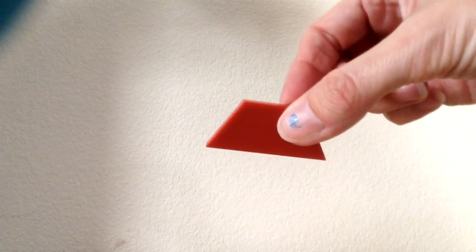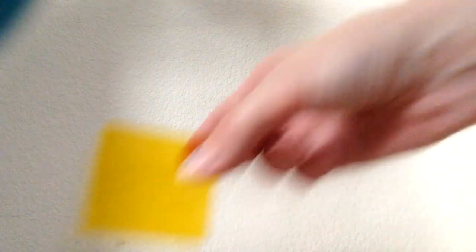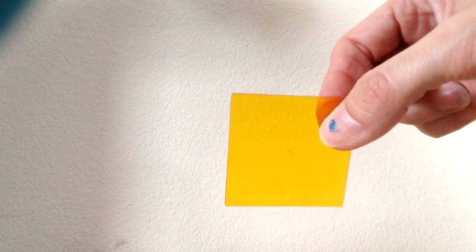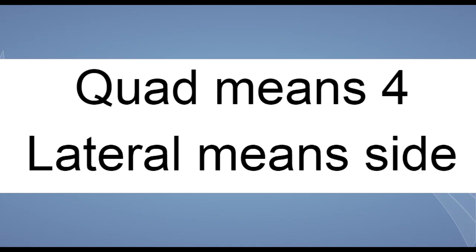This is a quadrilateral — four sides. This is a quadrilateral because it has four sides, and this is a quadrilateral because it has four sides. Quad means four, lateral means side. So a quadrilateral can only have four sides.